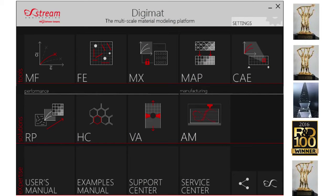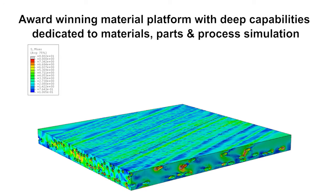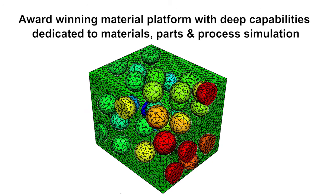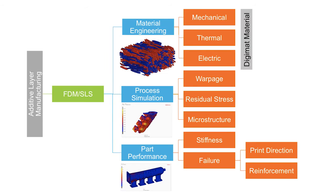Digimat AM addresses the industry's global need to print right the first time. e-Xstream engineering is extending Digimat, the award-winning material modeling platform, to release the first simulation chain of additive manufacturing of plastics and composites.